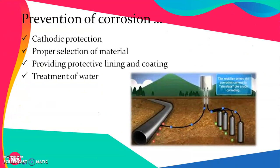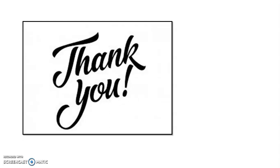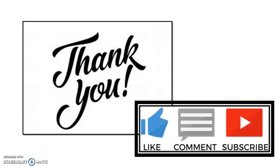We can prevent or limit corrosion with four methods: cathodic protection, proper selection of material, providing protective lining and coating for the pipe, and treatment of water if its pH is not in the desired range. That's it for this session. Let's meet in the next session to learn more about the conveyance of water. Thank you for having me — don't forget to like, comment, and subscribe.